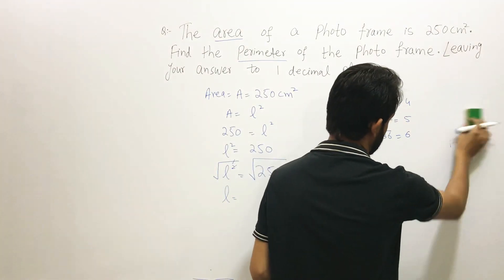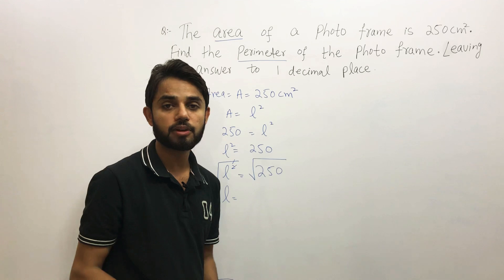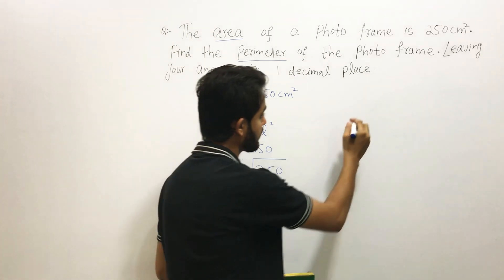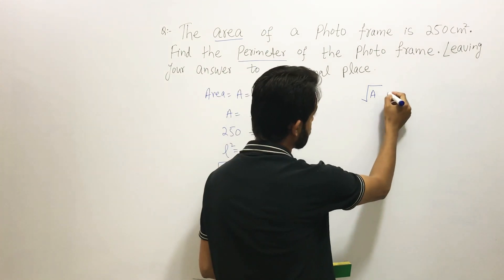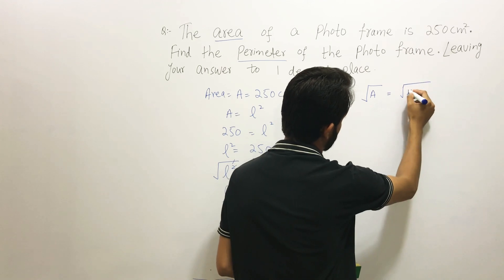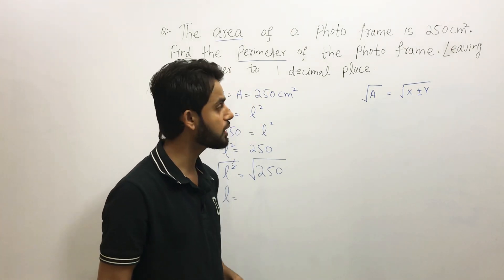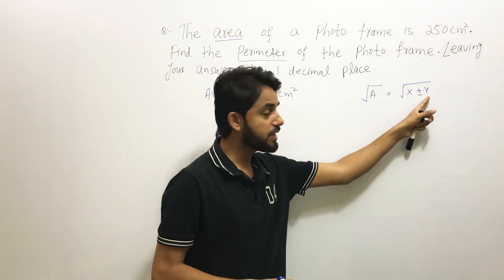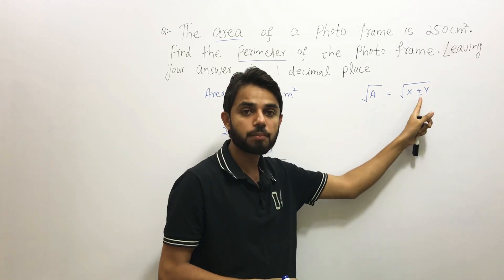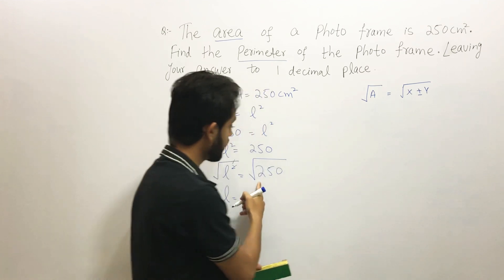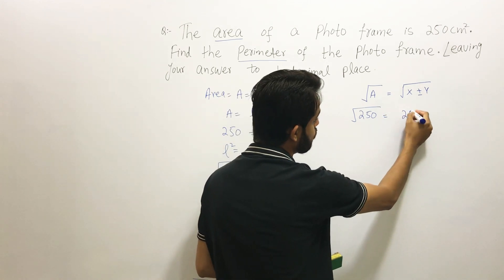We do have a technique to find the square root of a number that is not a perfect square. Here is the trick: take a number 'a' that is not a perfect square and divide it into x plus y or x minus y, where one of them should be a perfect square. For 250, we write it as 256 minus 6, since 256 is a perfect square: 16 times 16 equals 256.